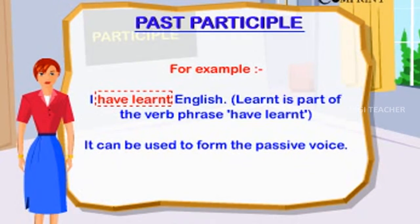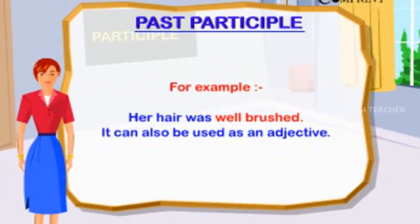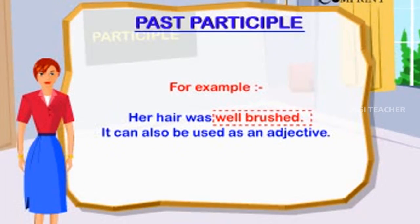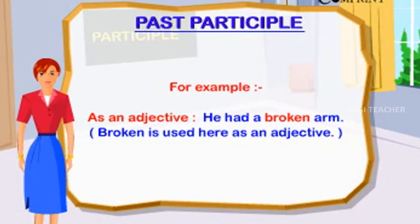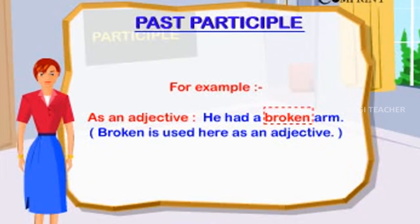It can be used to form the passive voice. For example, 'her hair was well brushed.' It can also be used as an adjective. For example, 'he had a broken arm.' 'Broken' is used here as an adjective.